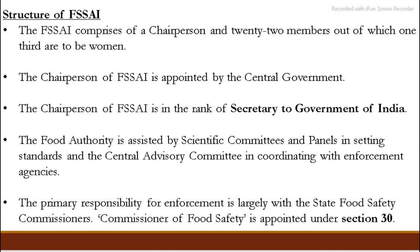Now, the structure of FSSAI: FSSAI has a chairperson and 22 other members, of which one-third are women. The chairperson is appointed by the central government and is a secretary-level officer. The food authority is assisted by scientific committees and panels, which help to set up food standards. There is also a central advisory committee and enforcement agencies.